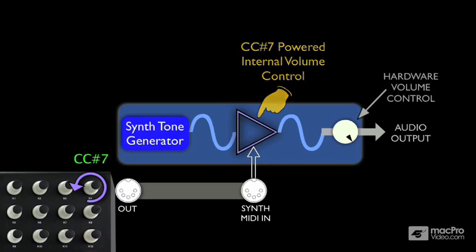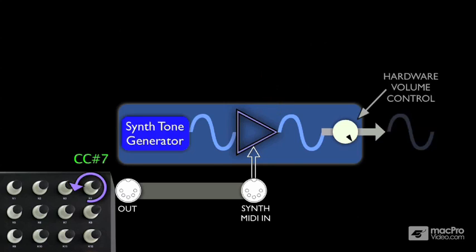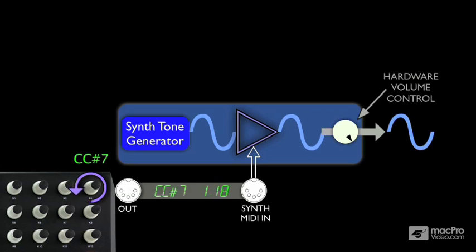Normally, the volume level of the signal that comes out of this end of the internal volume control is the same as the level that comes into it. But when the synthesizer receives CC7 messages with values lower than 127, the volume is reduced.